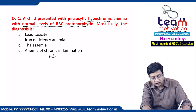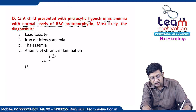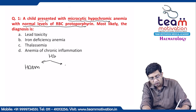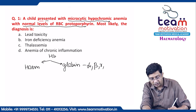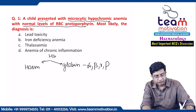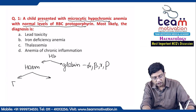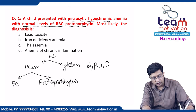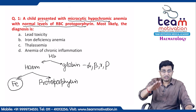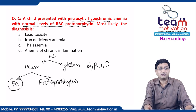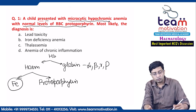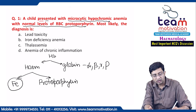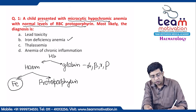Hemoglobin has a heme part and a globin part. The globin part consists of alpha, beta, gamma, and delta chains. The heme part has two components: iron and protoporphyrin. If iron levels decrease in the body for any reason, the protoporphyrin level will increase.